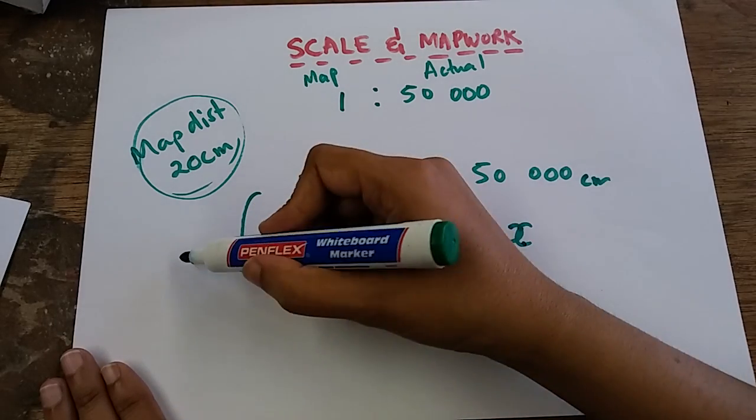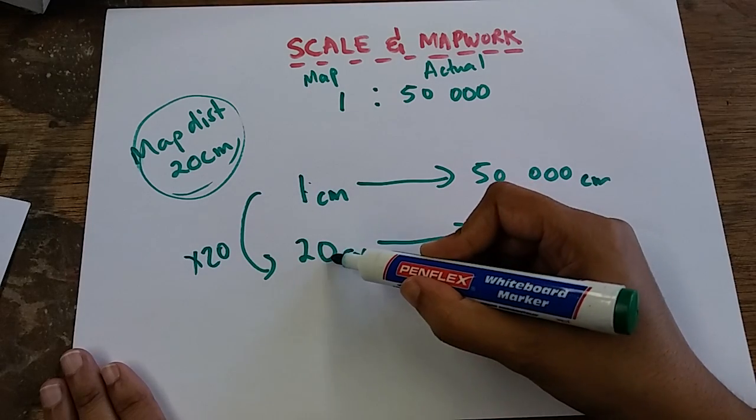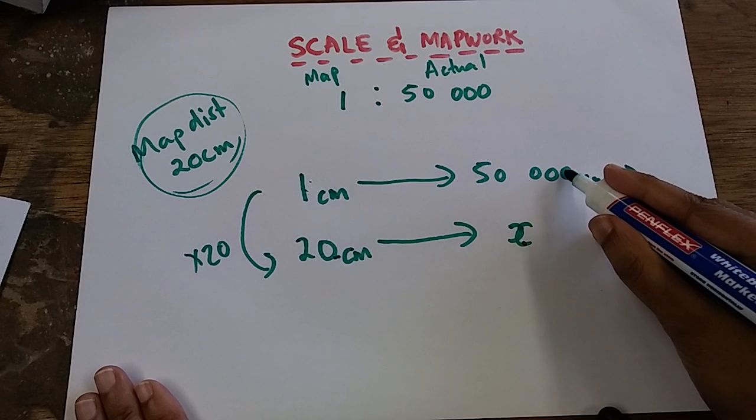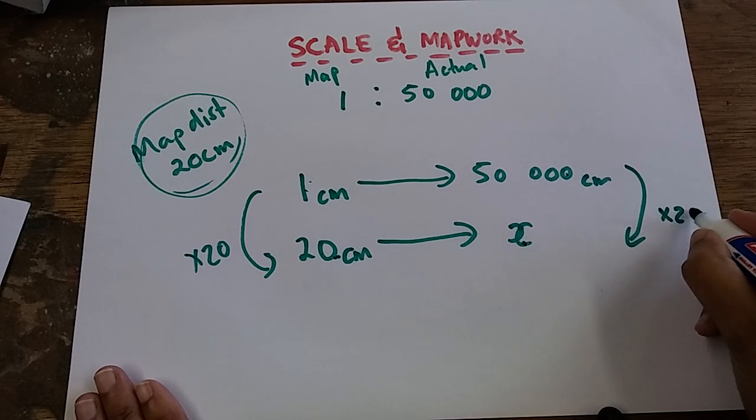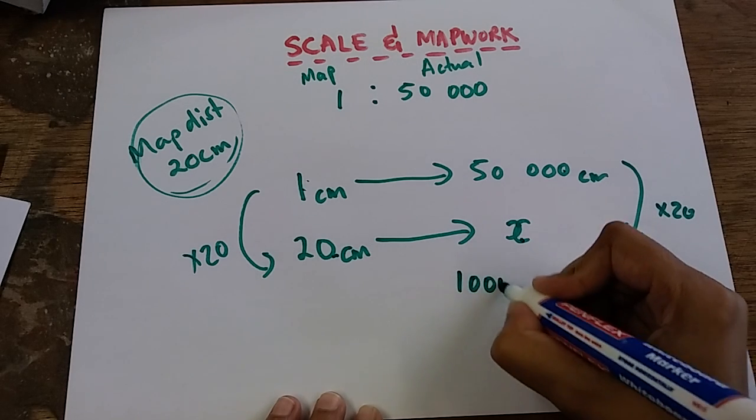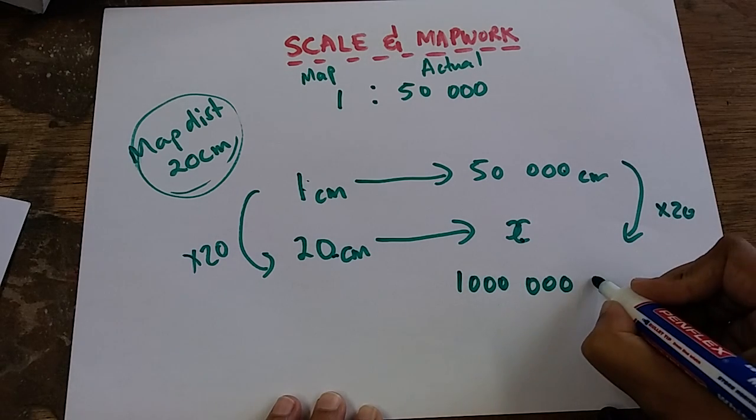Whatever I do on the left-hand side, I do on the right-hand side. So 50,000 times 20 gives me a value of 1,000,000. My unit is going to be in centimeters.